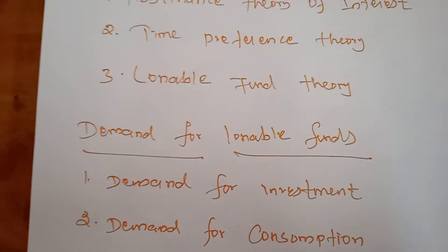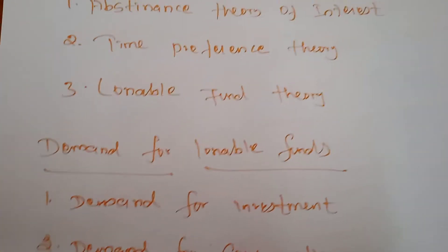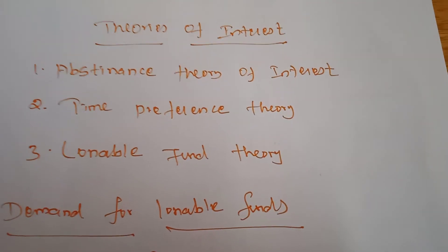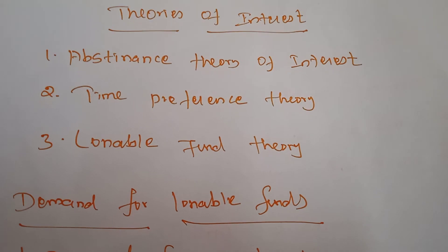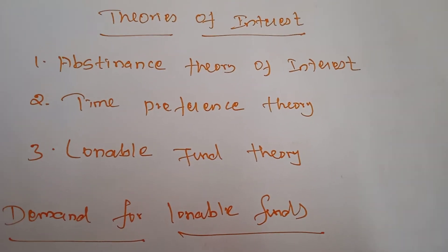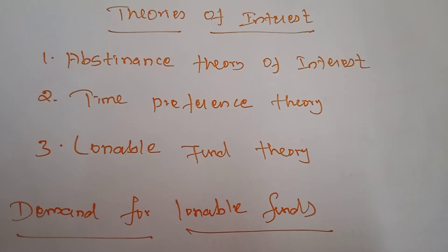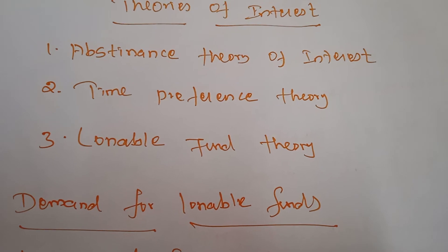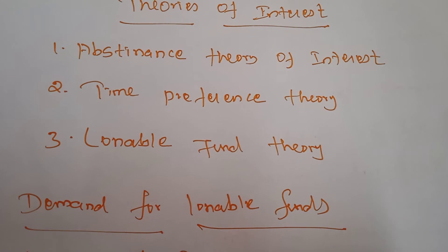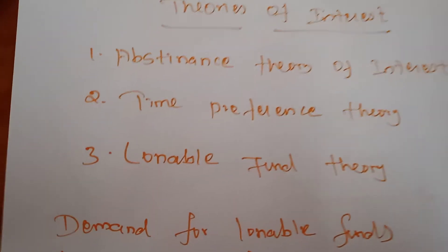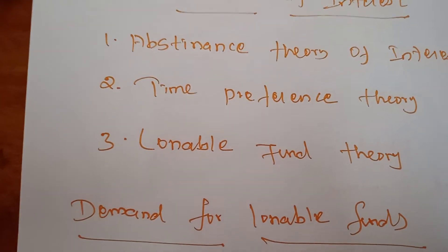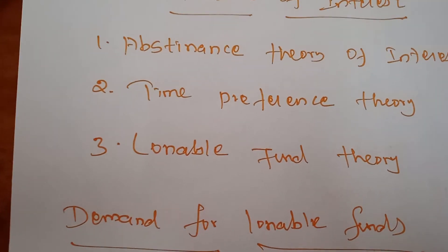Therefore, interest is the reward paid to the saver for his waiting. If individual persons want to create any capital, they have to wait till the savings become a large capital. But this theory has one criticism. According to this theory, savings involves suffering. But savings may not always involve suffering to some rich people.